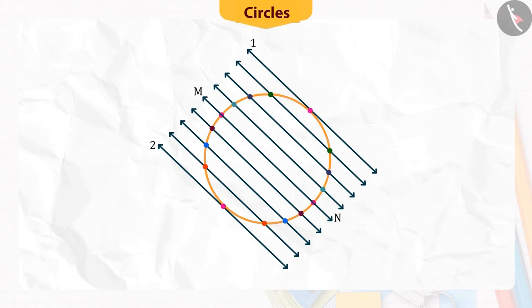On observing, you will find that in this situation, line 1 and 2 are two tangents parallel to the secant MN.